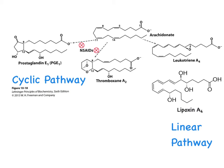Once the arachidonic acid is liberated, it can go through the cyclic pathway producing prostaglandins and thromboxanes, or through the linear pathway producing leukotrienes and lipoxins. Structurally, the key feature of prostaglandins is a 5-membered cyclopentane ring, while thromboxanes have a 6-membered ring containing oxygen, the oxane.